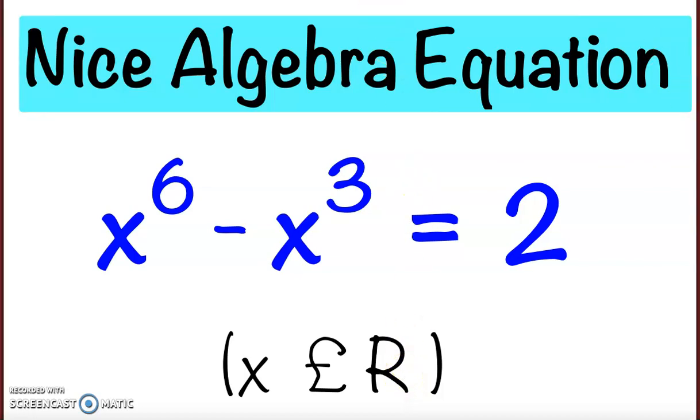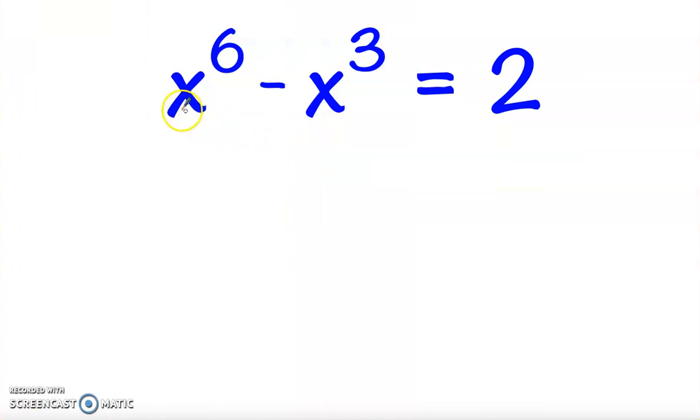Now let's go ahead with the solution. First, x to the power 6 can be written as x cubed all squared minus x cubed. Now let's bring 2 to the left-hand side, so it will become minus 2 equals 0.